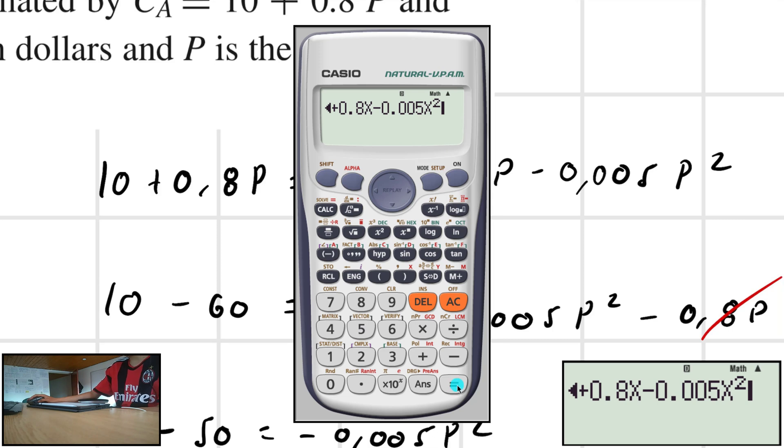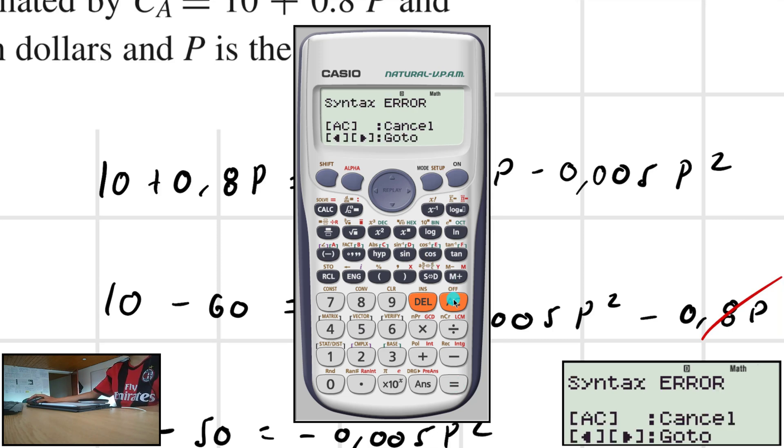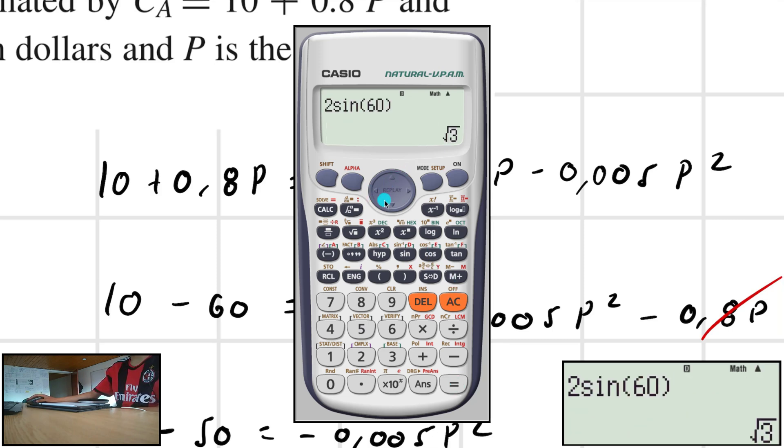Now, I cannot press this because this would be an error. So, right here I have it. All I have to do is to press shift, solve, solve for X. Yes, I want to solve it for X. This is a random number.